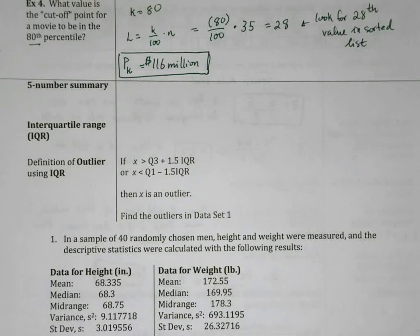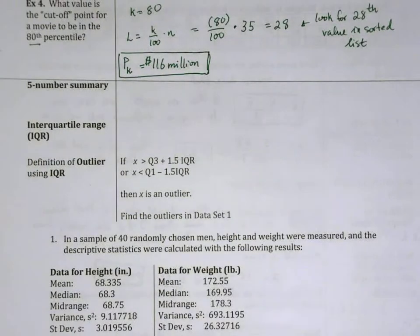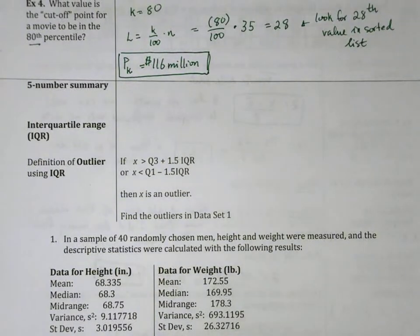Hello students, and welcome to our continuing lesson on relative standing. We talked about percentile, we talked about z-scores, and now we'll talk about the five-number summary.